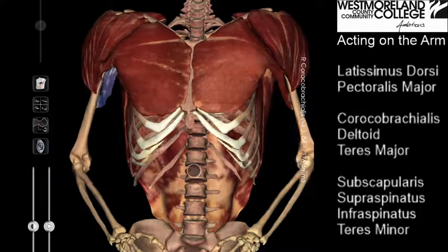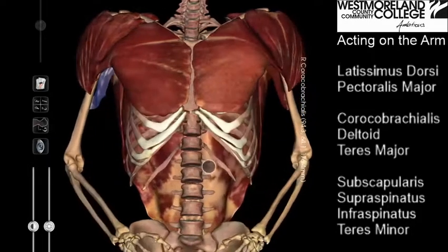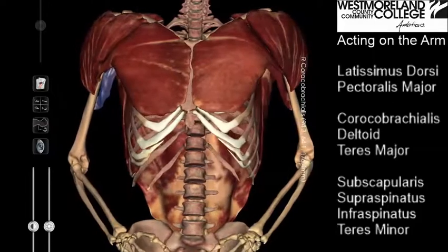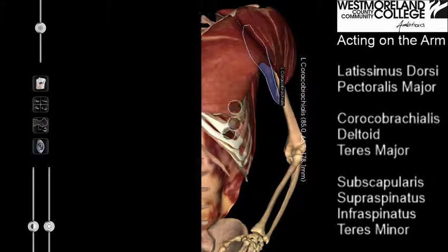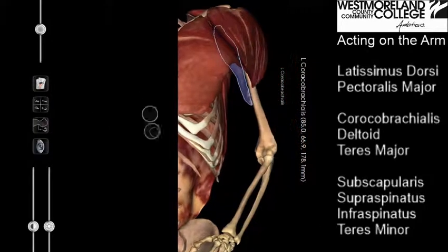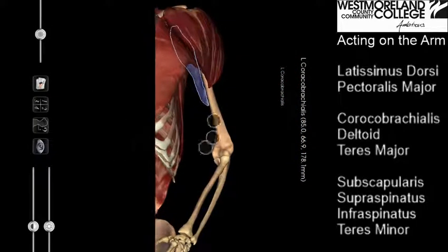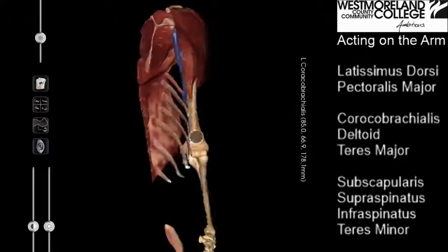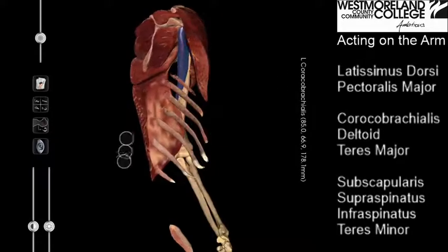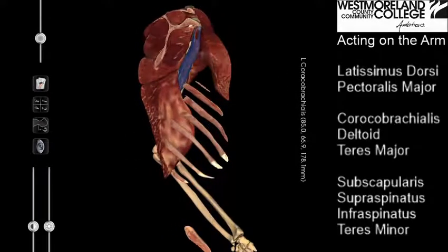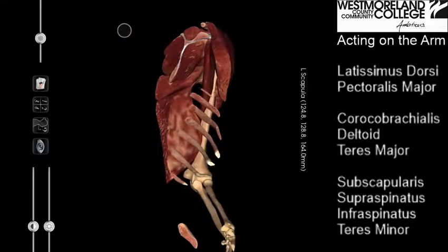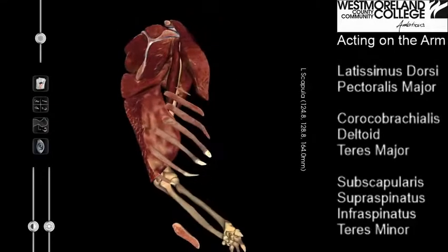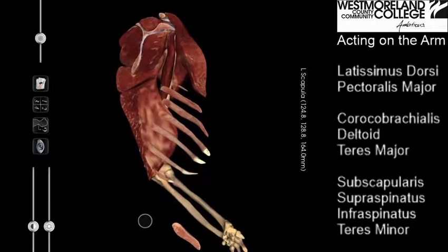The coracobrachialis goes from the coracoid process of the scapula to the humerus. We can see that in two different views, the first of which is removing by layer, showing where the coracoid process of the scapula connects to the coracobrachialis.